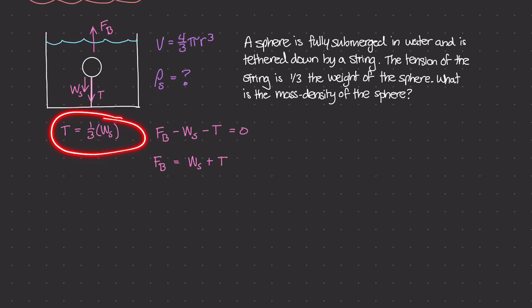The tension force is one-third the weight of the sphere, so I'm going to rewrite this equation: the buoyant force F sub b equals the weight of the sphere plus T, which is one-third W sub s. And W sub s plus one-third W sub s equals four-thirds W sub s.